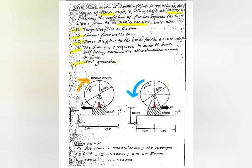The block brake shown in the figure is to balance a torque of 500 Nm on a drum shaft at 1000 rpm, assuming the coefficient of friction between the brake shoe and drum to be 0.25 and 2 theta less than 60 degrees. Determine: first, the tangential force on the shoe; second, the normal force on the shoe; third, the force F applied to the brake for clockwise and counterclockwise rotation.